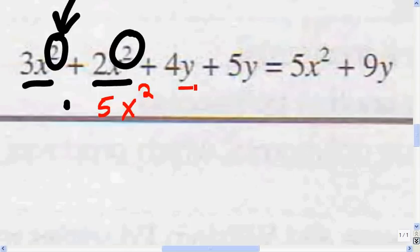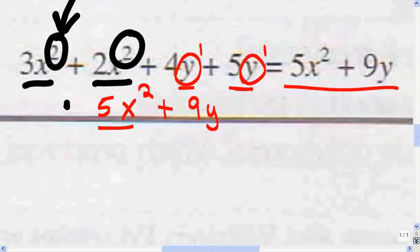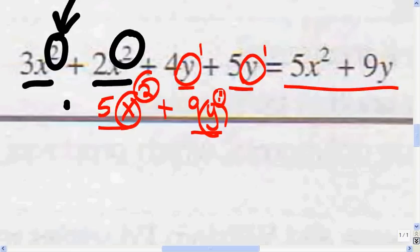And I can add the 4y and the 5y because they have the same variable, y, and the same exponent, which is 1. So 4y plus 5y — 4 plus 5 is 9y. And I can't add the 5x squared and the 9y because the variables are different and the exponents are different.